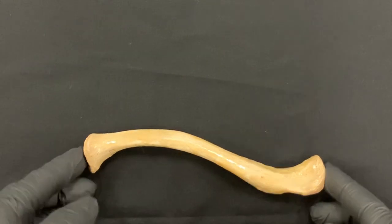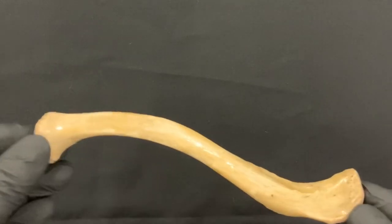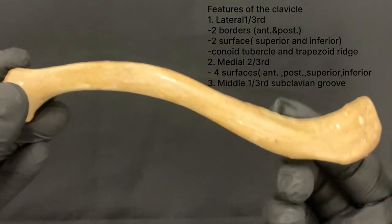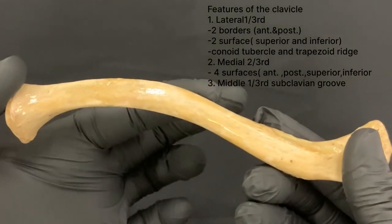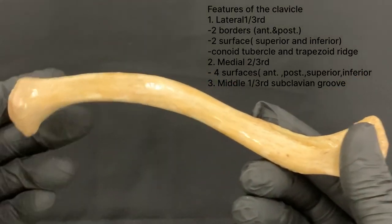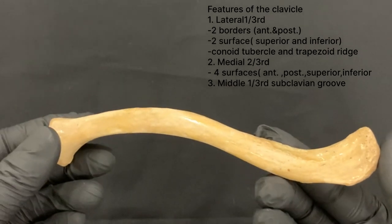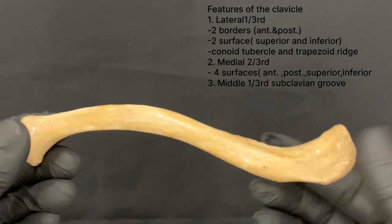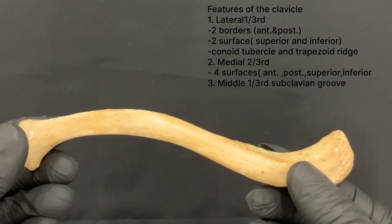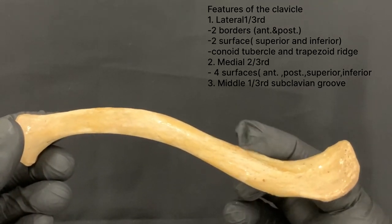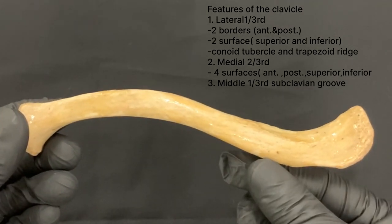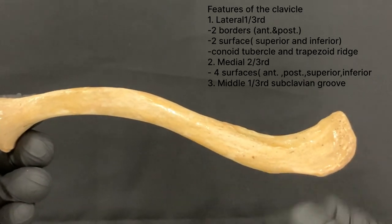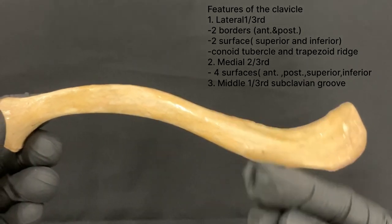The features of the clavicle — the shaft. The shaft is divided into the lateral one-third and the medial two-thirds. The lateral one-third of the shaft is flattened from above downwards and has two borders: the anterior border, which is concave forwards, and the posterior border, which is convex backwards.